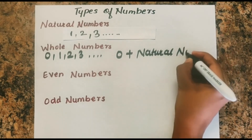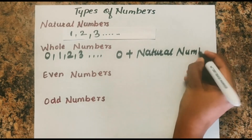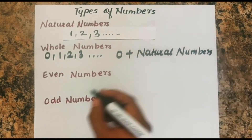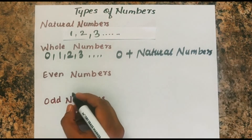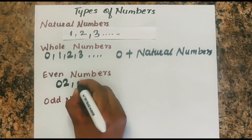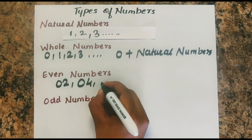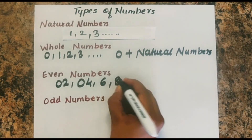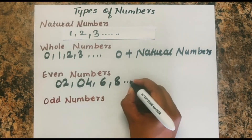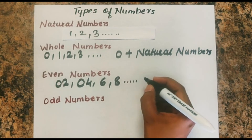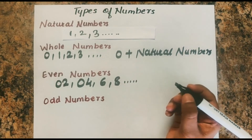And what are even numbers? Even numbers are numbers which are divisible by 2, which means 0, 2, 4, 6, 8 are called even numbers.